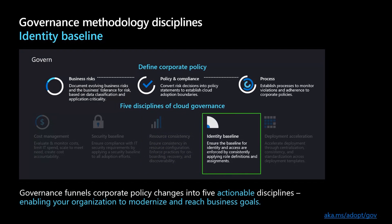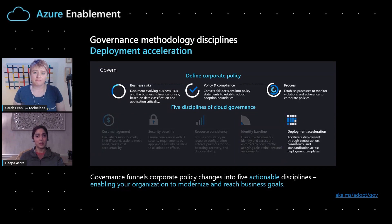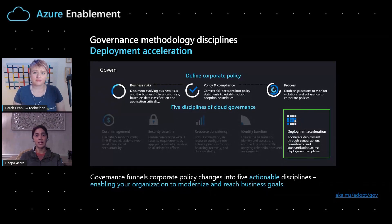The fourth discipline is identity baseline. We need a strong set of policies around identity to enable accountability through role-based authentication — giving users the correct access to the right data, resource creation, servicing, reporting, and administration. Last but not least, deployment acceleration ties very closely with resource consistency. Here we want to ensure a consistent way of getting resources deployed to the cloud environment. Templatized deployment and infrastructure as code help remove errors that arise from manual tasks, allowing us to manage, operate, patch, update, and upgrade in a correct manner. This discipline ties to the speed and efficiency aspect of the balance discussed at the beginning of the episode.